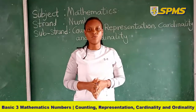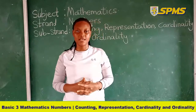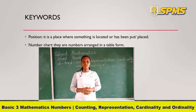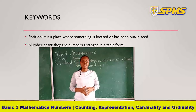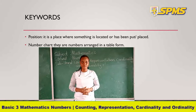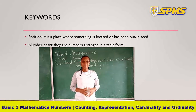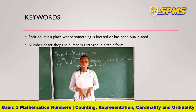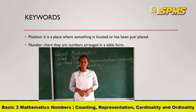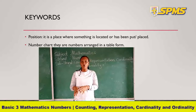Let's go through our key words to understand the lesson better. Our first key word is position. A position is a place where something is located or has been put or placed. So when you place something at a particular place or location, we can say that that is the position of the thing.